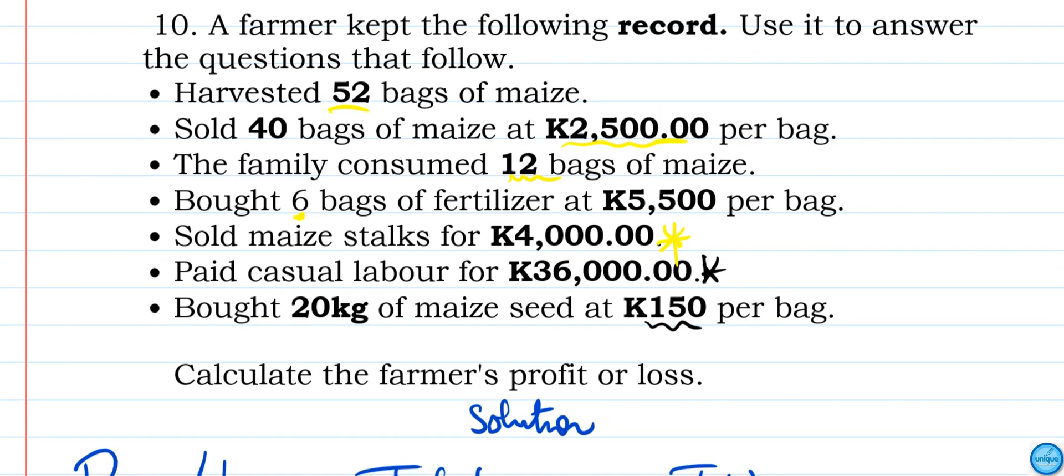So according to the question, income is what we received. To find the total income, we sold 40 bags multiplied by K2,500. And that's the income.